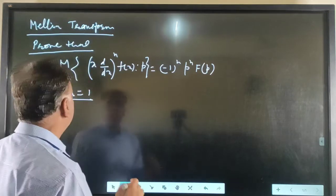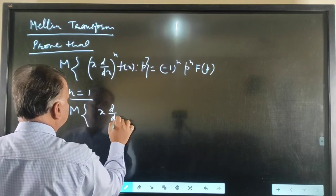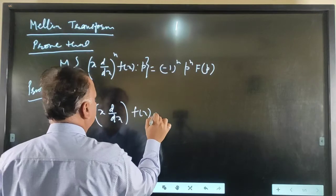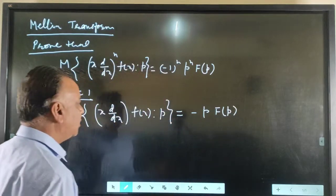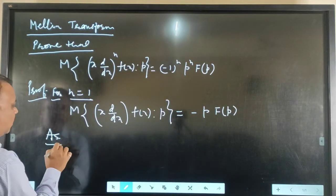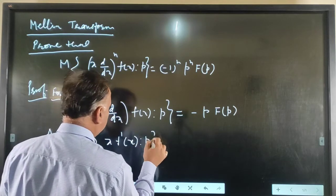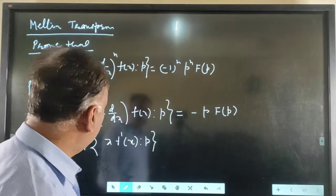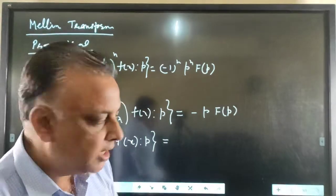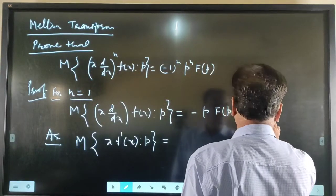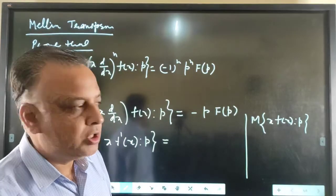We will prove that the Mellin Transform of x d/dx of f(x) with respect to p is equal to minus p times F(p). We first find the Mellin Transform of x f'(x). As we know, the Mellin Transform of x f(x) with respect to p, if the Mellin Transform of f(x) is F(p), gives F(p+1).